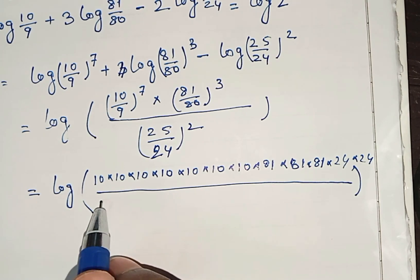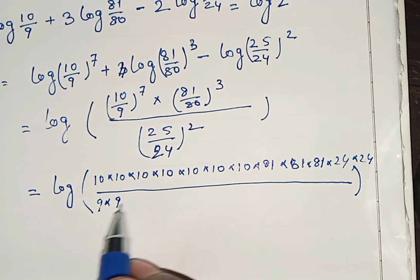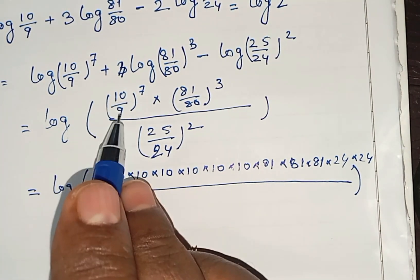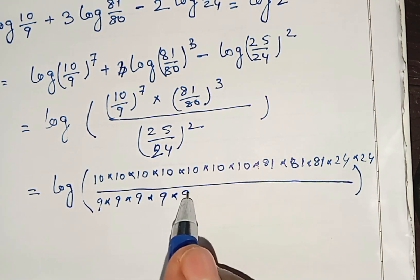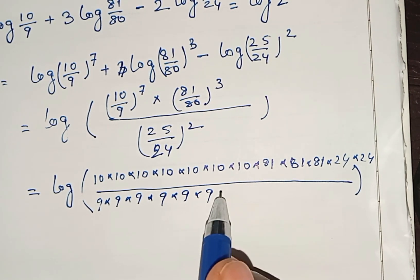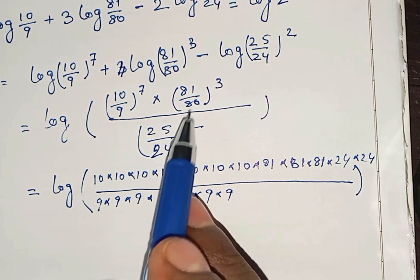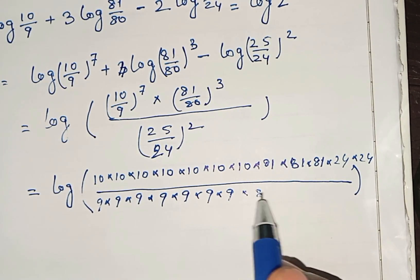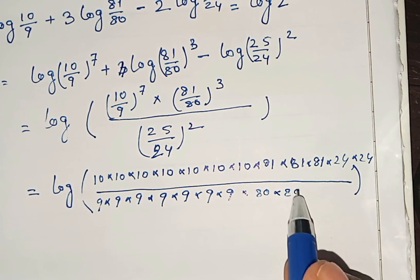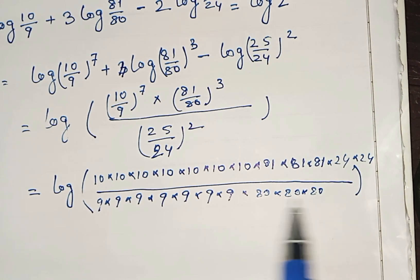And at the denominator it will be 9, 9, 9, seven times 9. Now it is 80, three times we have to write 80. So 2 times 25 we have to write, 25 multiplied by 25.